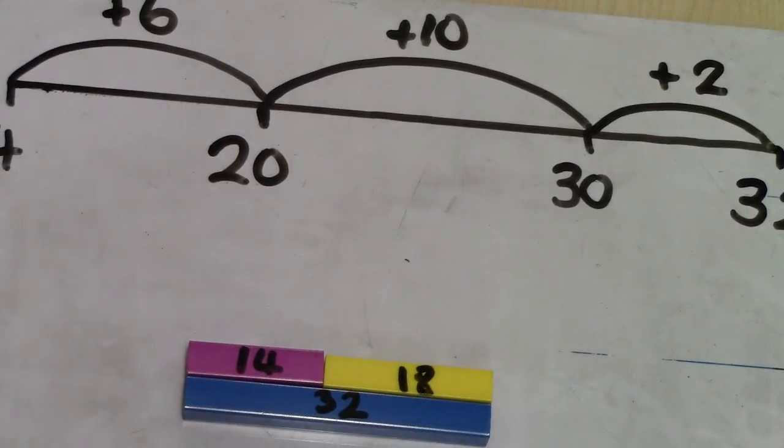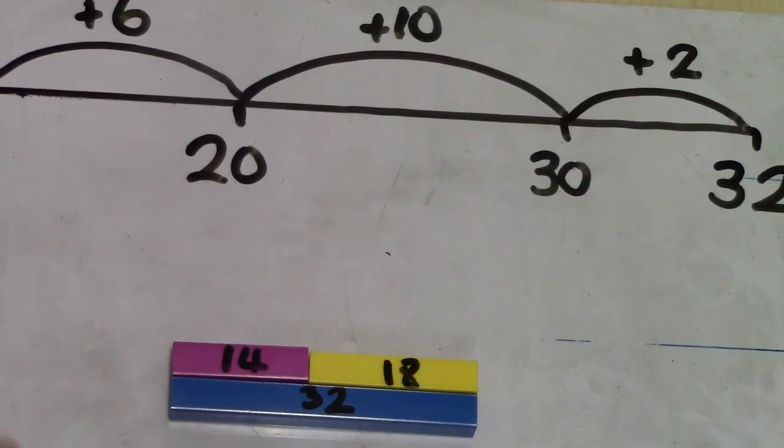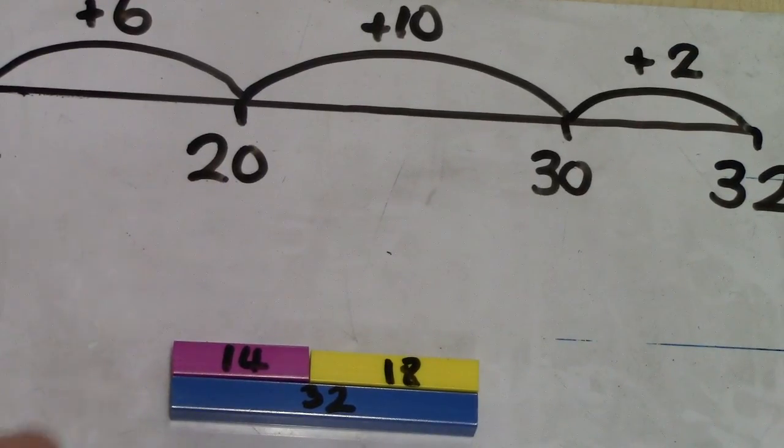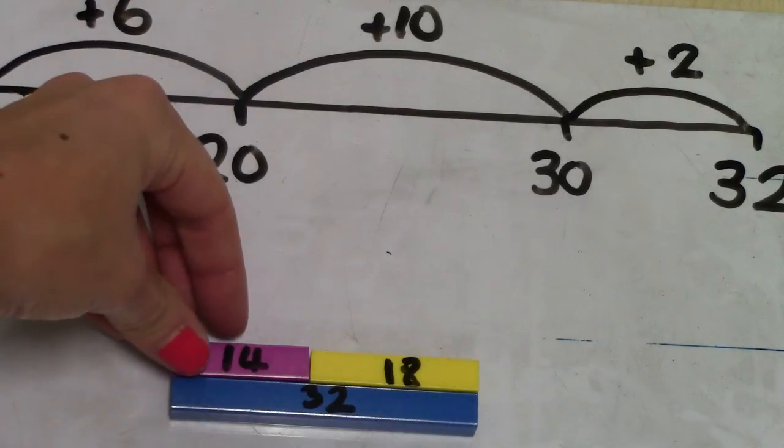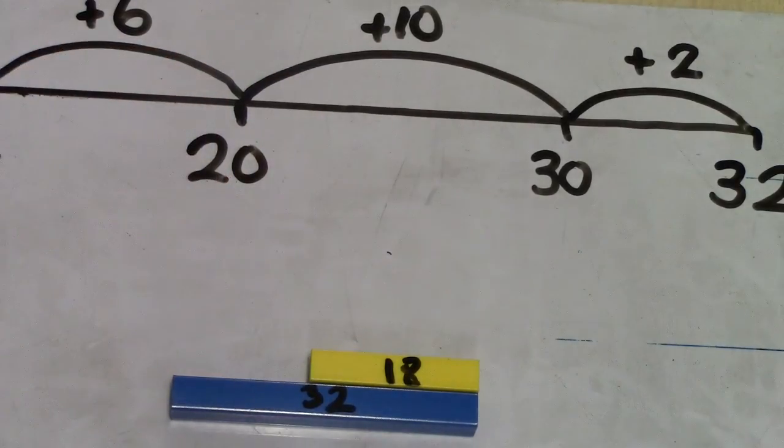Using Cuisenaire we can show the related addition facts and the related subtraction facts. So 32, if we take away 14, it leaves us with 18.